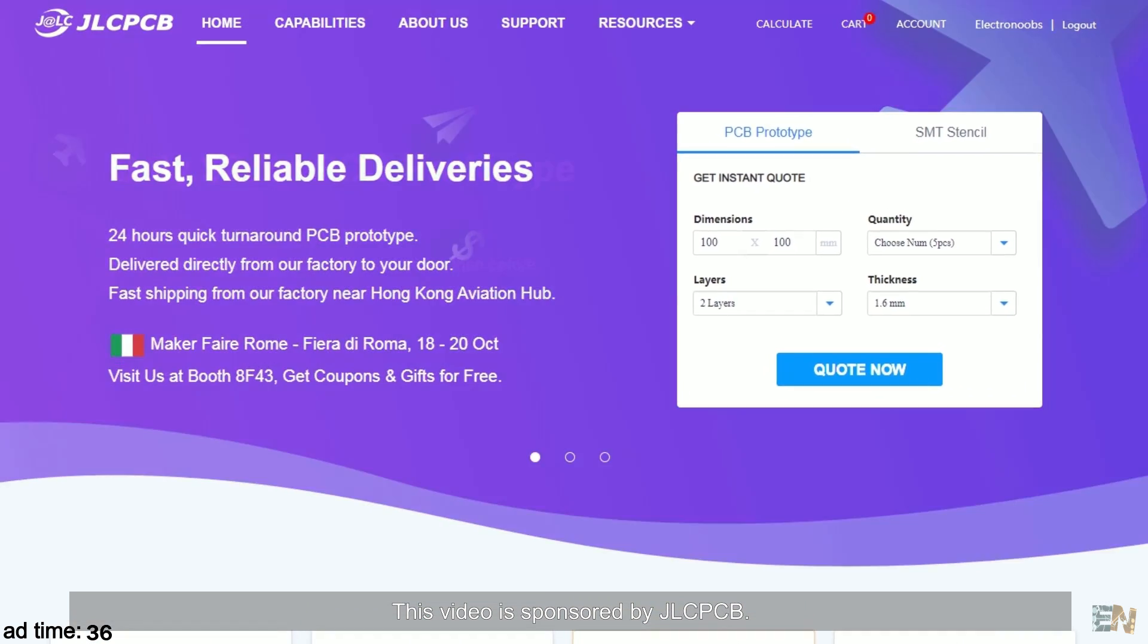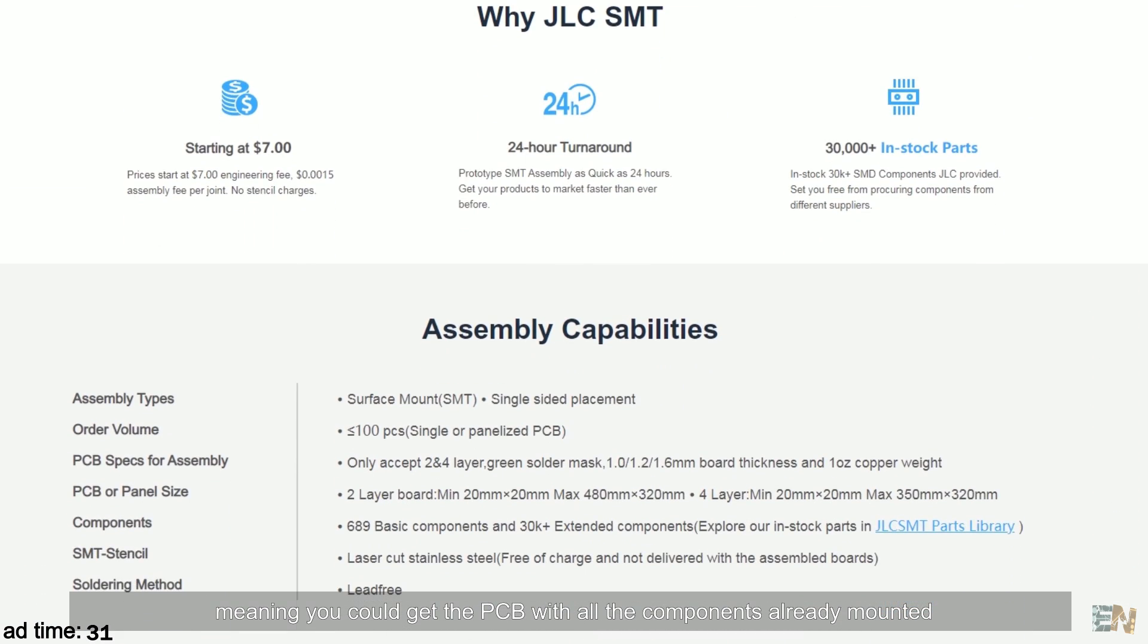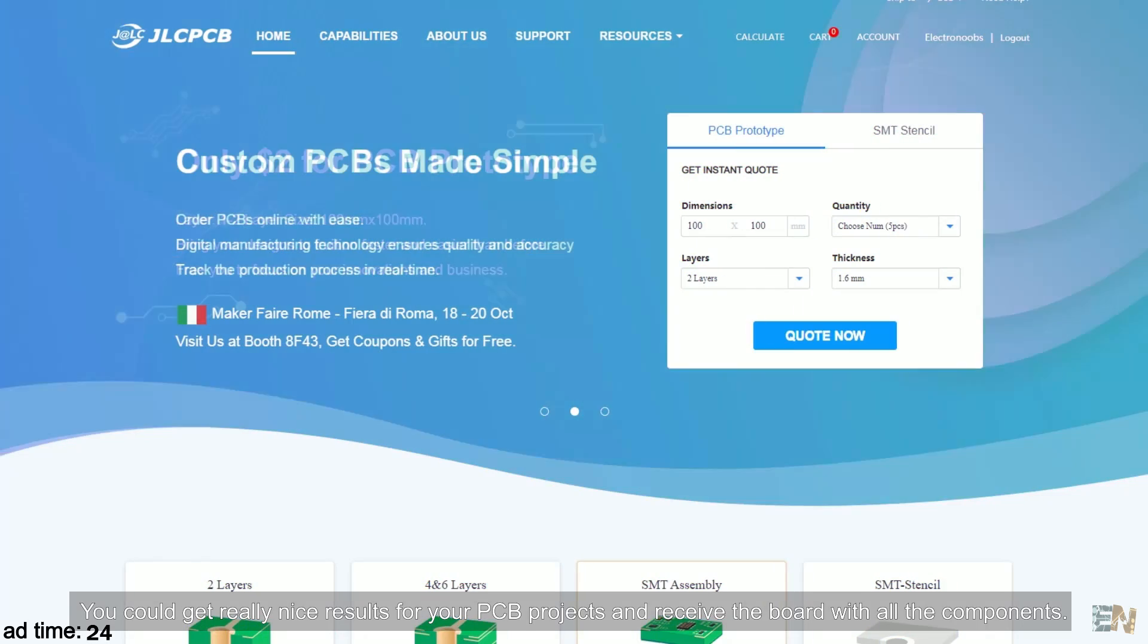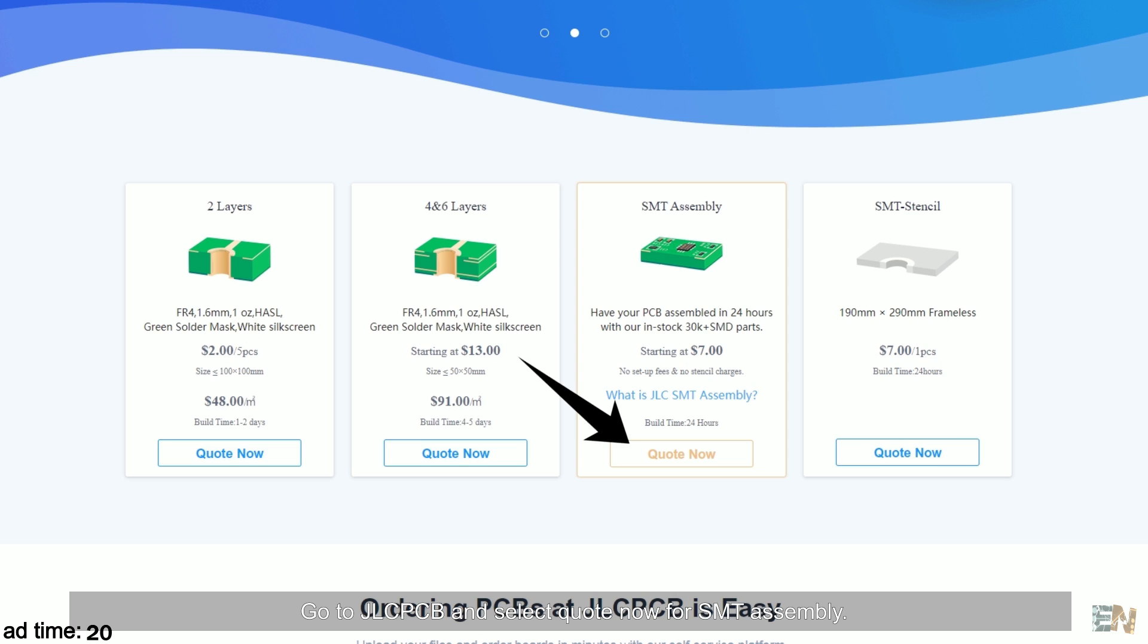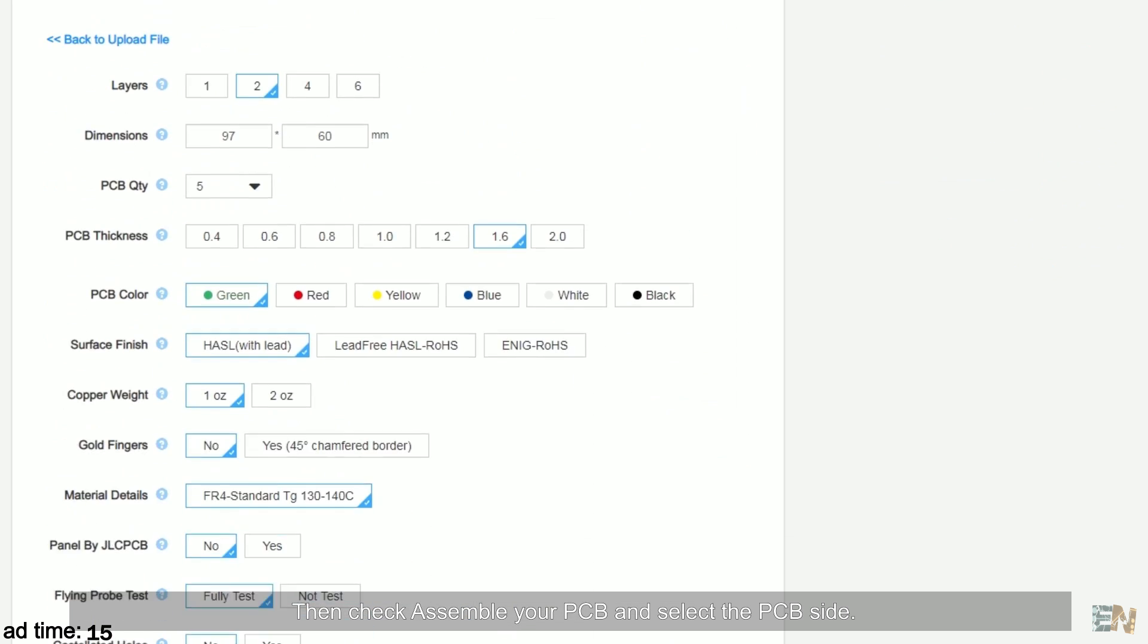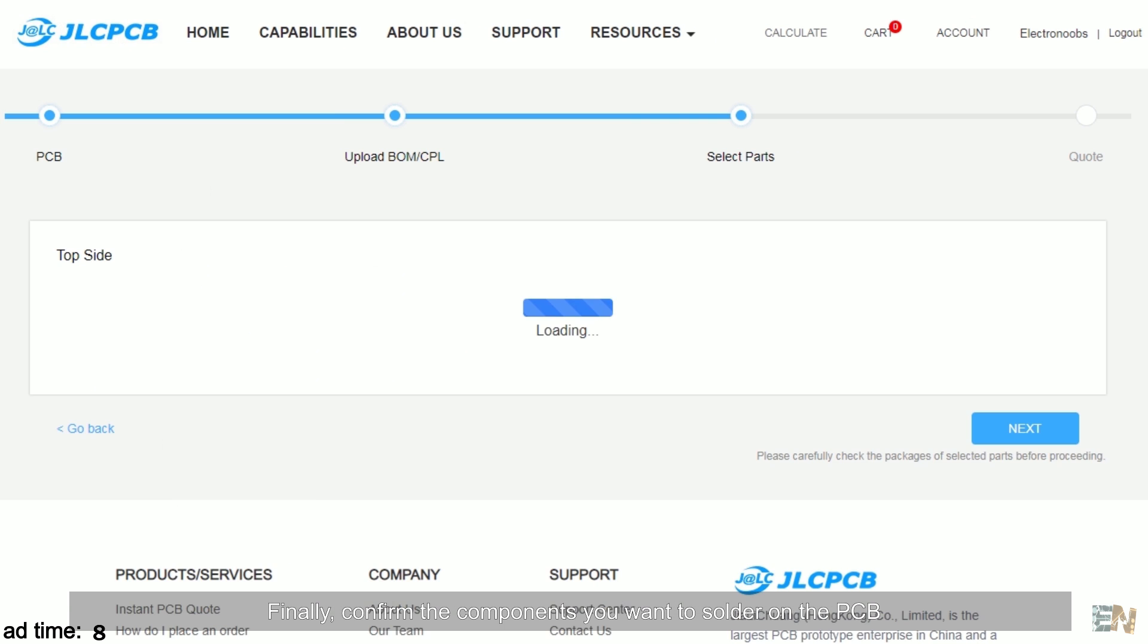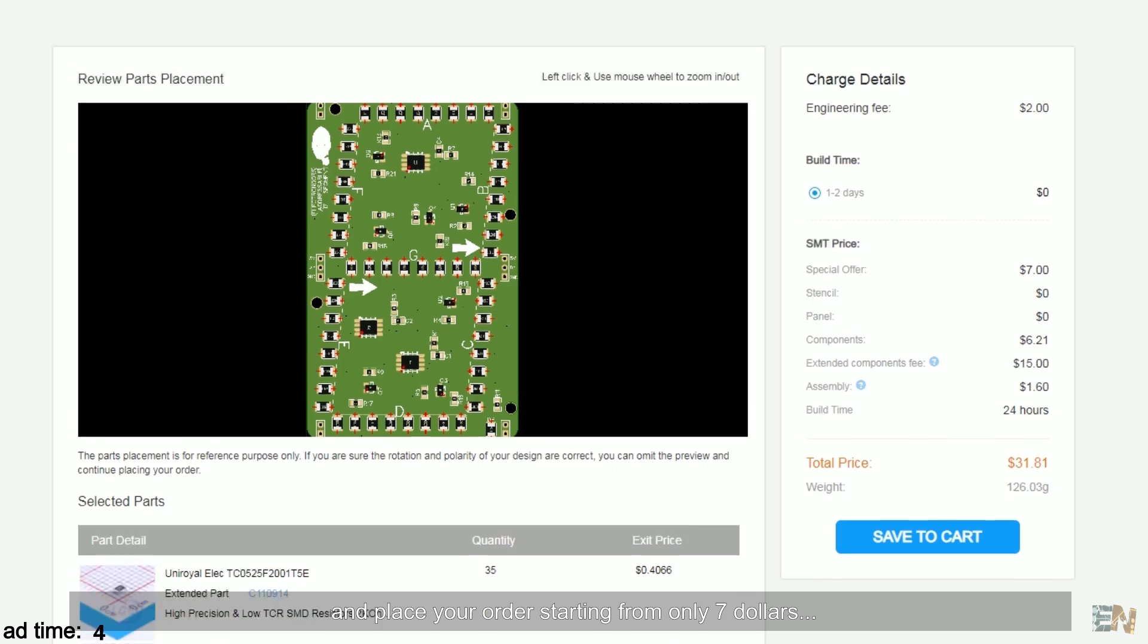This video is sponsored by JLCPCB. They now have an SMT service, meaning that you could get the PCBs with all the components already mounted. You could get really nice results for your PCB projects and receive the board with all the components. Go to JLCPCB and select order now for the SMT assembly. Upload the Gerber files of the PCB. Then check assemble your PCB and select the PCB side. On the next page, upload the BOM and the pick and place files. Finally, confirm the components you want to solder on your PCB and place your order starting from only $7.